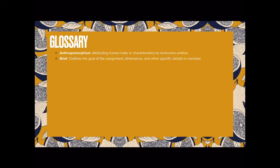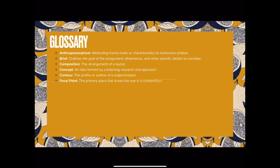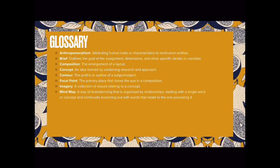Composition is the arrangement of a layout. Concept, an idea formed by combining research and approach. Contour, the profile or outline of a subject or object. Focal point, the primary place that drives the eye in a composition. Imagery, a collection of visuals relating to a concept. Mind map, a way of brainstorming that is organized by relationships starting with a single word or concept and continually branching out with words that relate to the one preceding it.